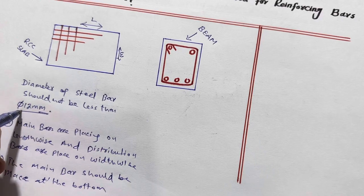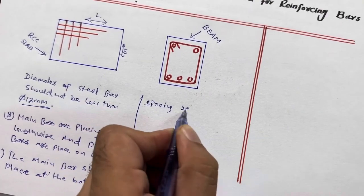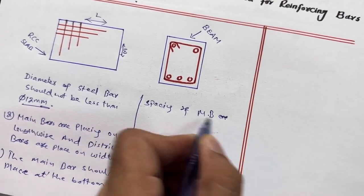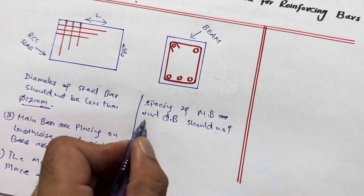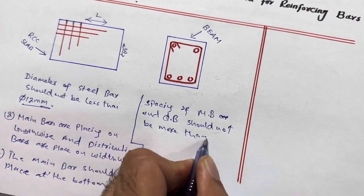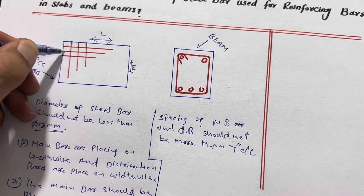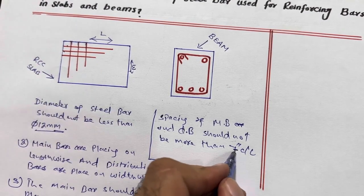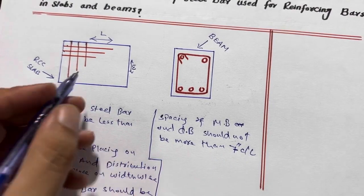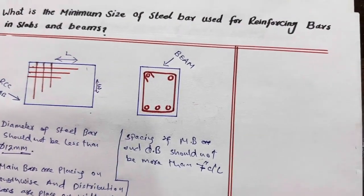So 12 millimeter is the minimum diameter for the slab. Next, the spacing of main bars and distribution bars should not be more than seven inches center to center. If we increase the spacing, it cannot support the structural load applied on top of the RCC slab. Seven inches is acceptable — don't go more than this, otherwise you will face problems because we also have bending moment, both negative and positive, and to resist these we provide extra steel rods, also called bent-up bars.